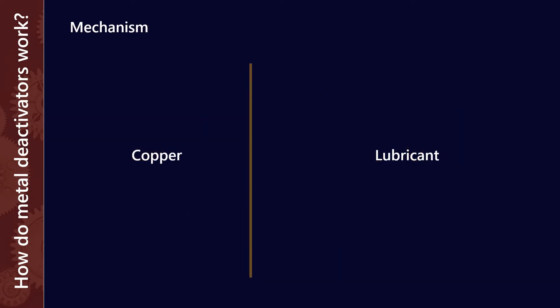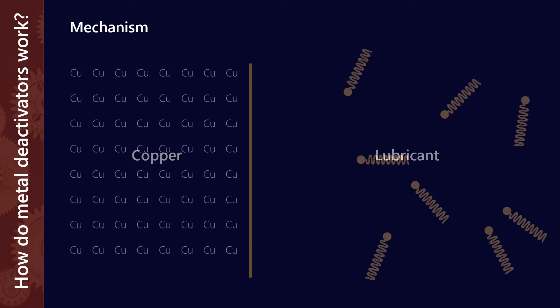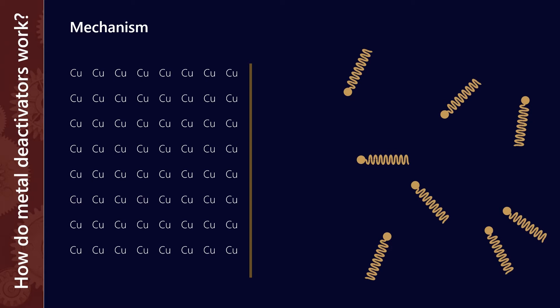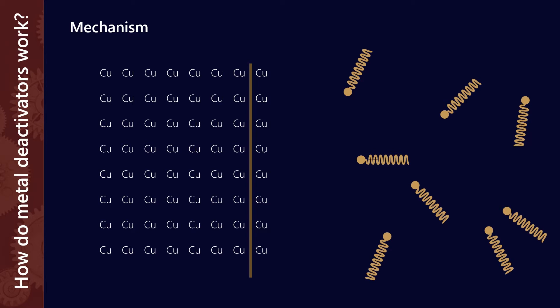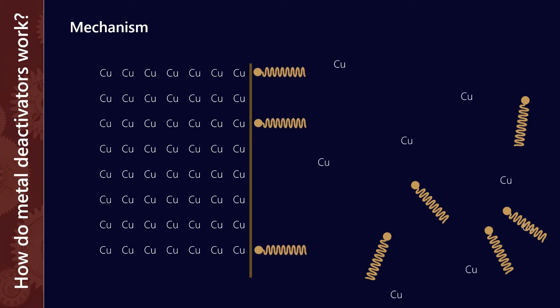Here's the mechanism. Imagine there's a boundary between the metal and the lubricant — in this case we're showing copper. We've got copper atoms on one side and then the lubricant with the metal deactivator additives on the other side. What's going to happen is that when the copper is new there's going to be an ionic exchange, so some of the copper atoms are going to end up in the lubricant and disperse through it. At the same time, the metal deactivator additives are trying to bind with the surface and minimize the contact surface area between the metal and the lubricant. What that does is slow down the passivation process.